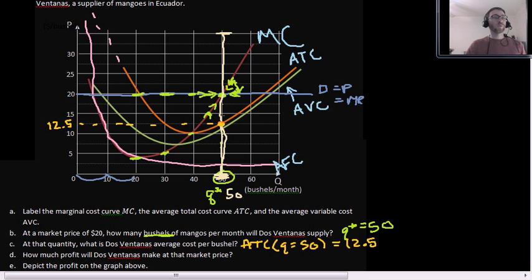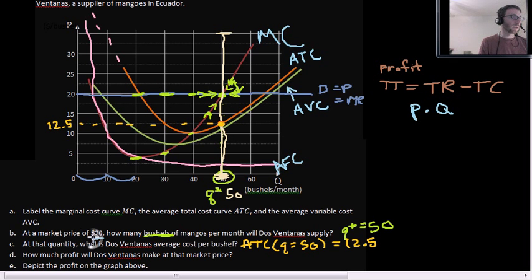How much profit will Dos Ventanas make at that market price? We've looked at two ways to calculate profit. One of them is super useful, but you can't really see it on the graph. That is profit equals total revenue TR minus total cost TC. We can view that on here. Total revenue is an area. That area is going to be a rectangle, P times Q. So the price is $20, and if we want a rectangle that's P units high, we're going to look at a rectangle that goes all the way from zero up to 20 along the P axis. Q units wide, that's Q star, that's 50.